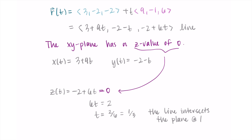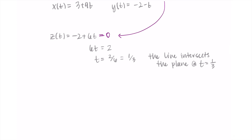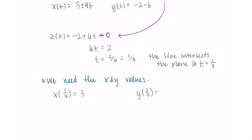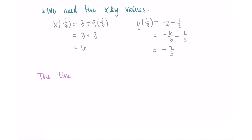The line and plane intersect at t = 1/3. I still need the actual point, so I plug t = 1/3 into the x and y equations. For x: 3 + 9(1/3) = 3 + 3 = 6. For y: -2 - 1/3 = -6/3 - 1/3 = -7/3. The z-value is 0, so the line intersects the xy-plane at the point (6, -7/3, 0).